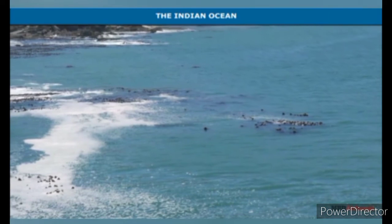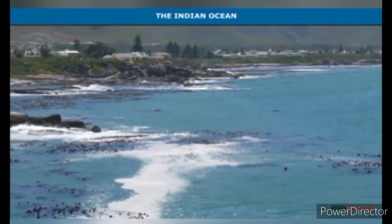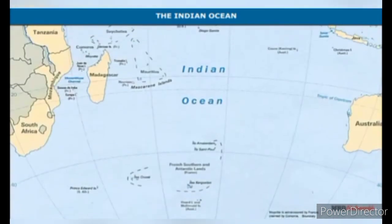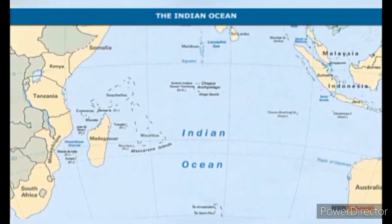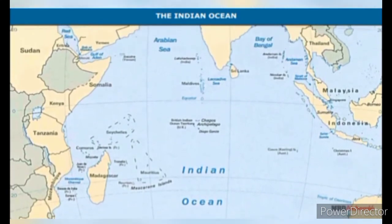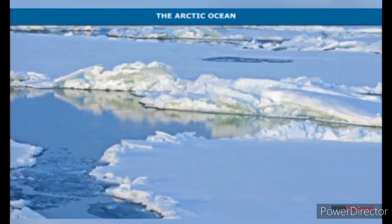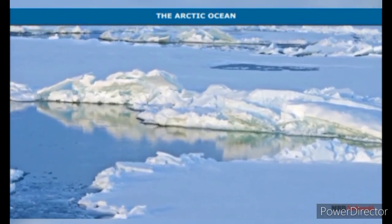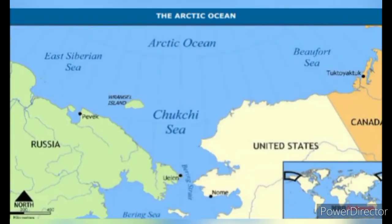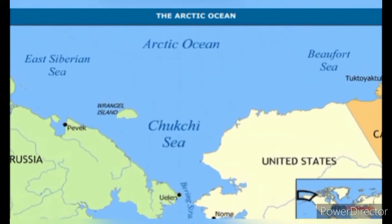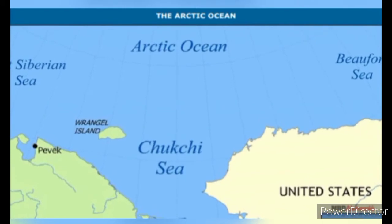The Indian Ocean is the only ocean named after a country — India. Its shape is almost triangular: in the north it is bound by Asia, in the west by Africa, and in the east by Australia. The Southern Ocean encloses the continent of Antarctica and extends northward to 60 degrees south latitude. The Arctic Ocean is located within the Arctic Circle and surrounds the North Pole. It is bound by the northern coasts of North America and Eurasia, and is connected with the Pacific Ocean by a narrow stretch of shallow water known as the Bering Strait.